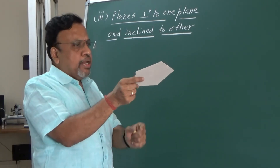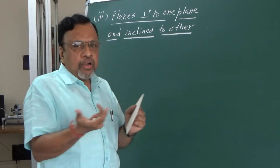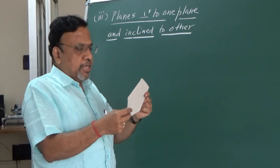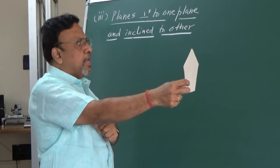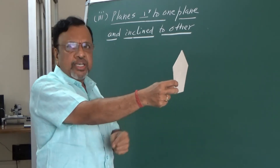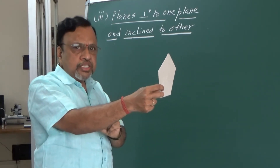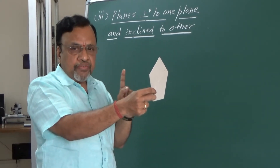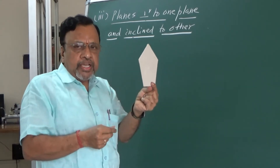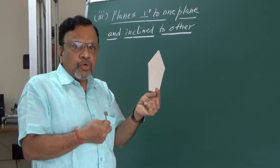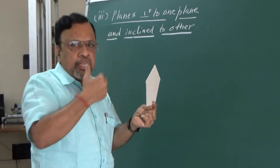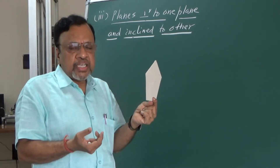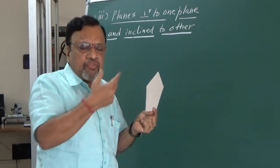A particular plane can be parallel to one plane and perpendicular to another. Also, this particular plane can be perpendicular to both HP as well as VP. In all these cases, we observed one thing: always I need to start from that particular view wherein the plane is parallel to one of the reference planes, because when a plane is parallel to a reference plane, we can see the true shape and size in that view.